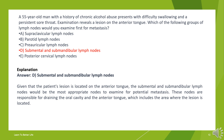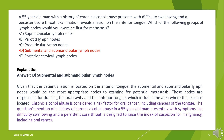The answer is D. Submental and submandibular lymph nodes. Given that the patient's lesion is located on the anterior tongue, the submental and submandibular lymph nodes would be the most appropriate nodes to examine for potential metastasis. These nodes drain the oral cavity and anterior tongue. Chronic alcohol abuse is a risk factor for oral cancer, including cancers of the tongue, raising the index of suspicion for malignancy.